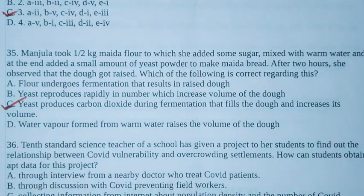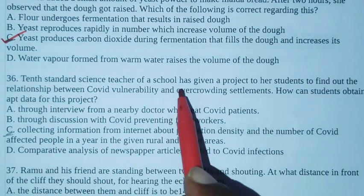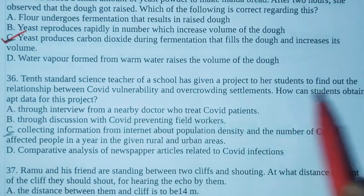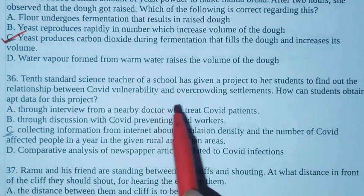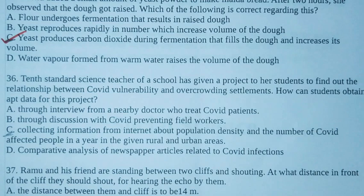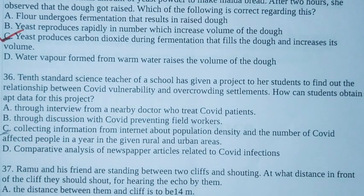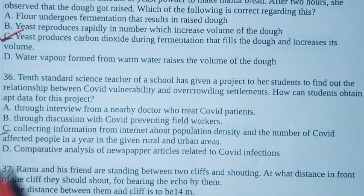Next 36th. Tenth standard science teacher of a school has given a project to her students to find out the relationship between covid vulnerability and overcrowding settlements. How can students obtain apt data for this project?